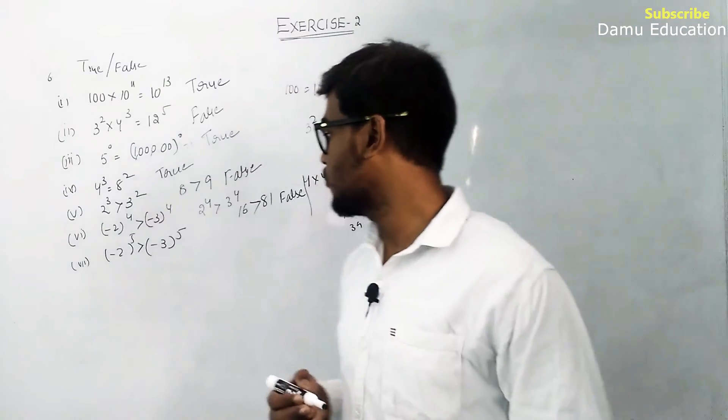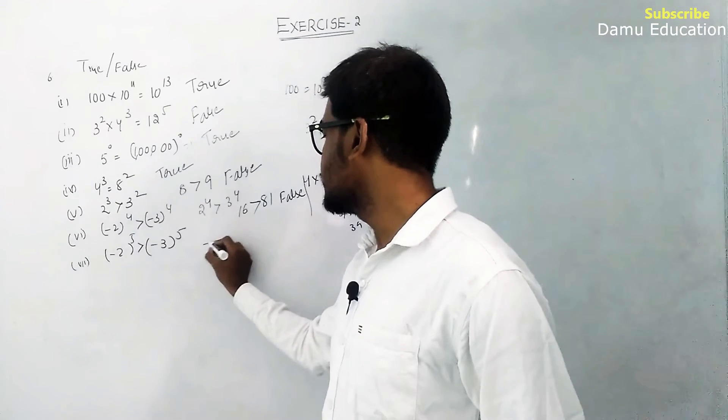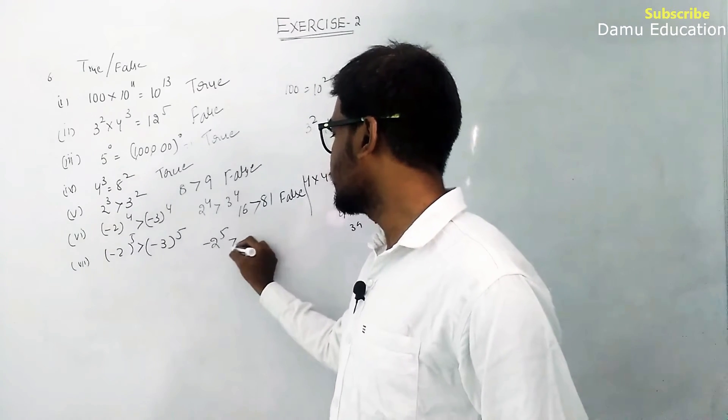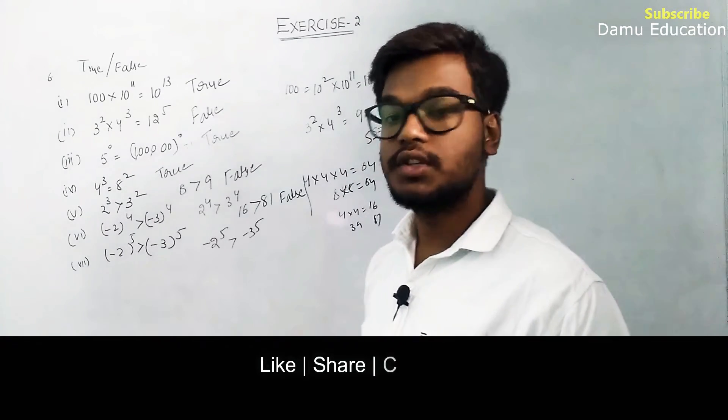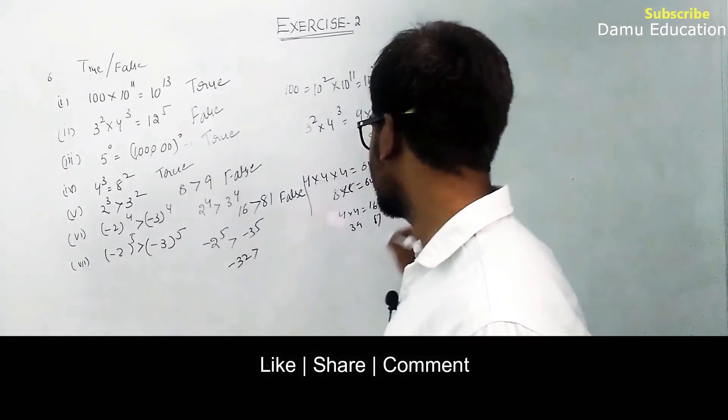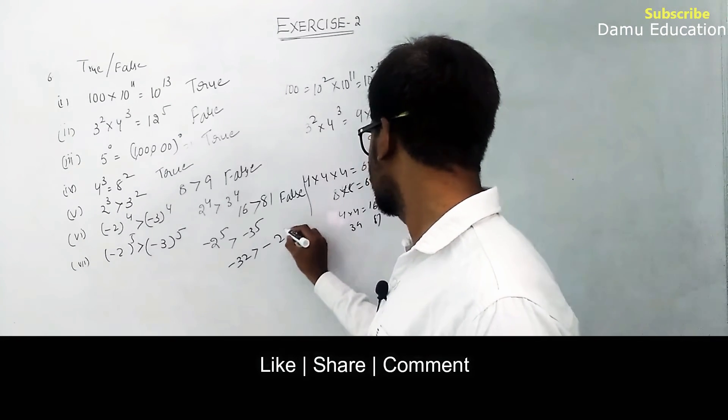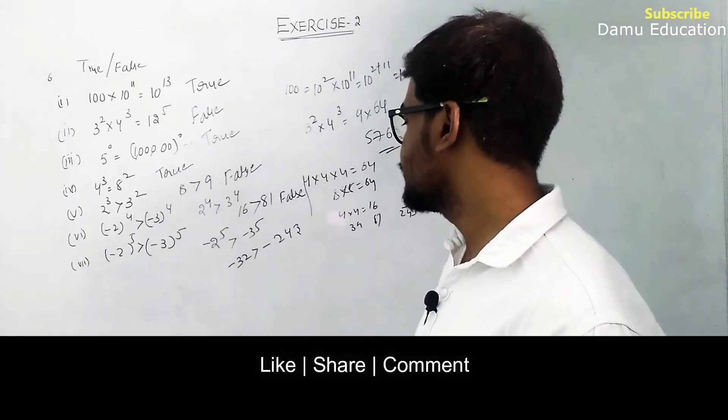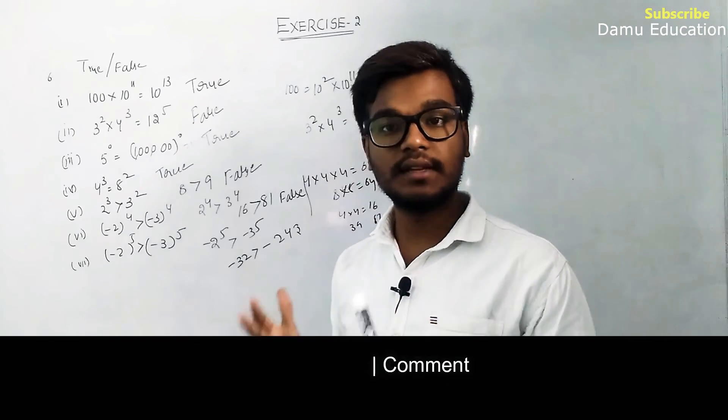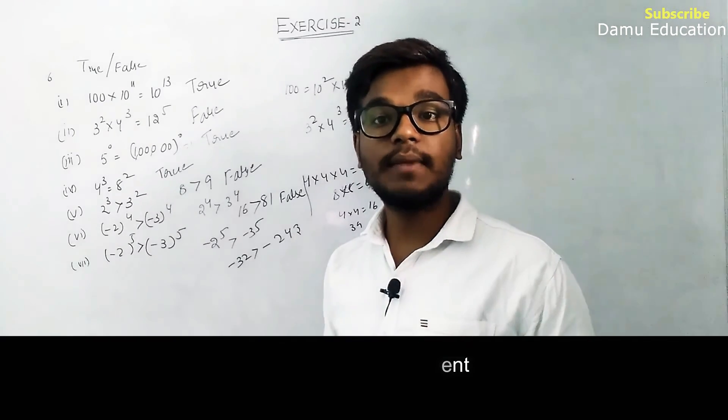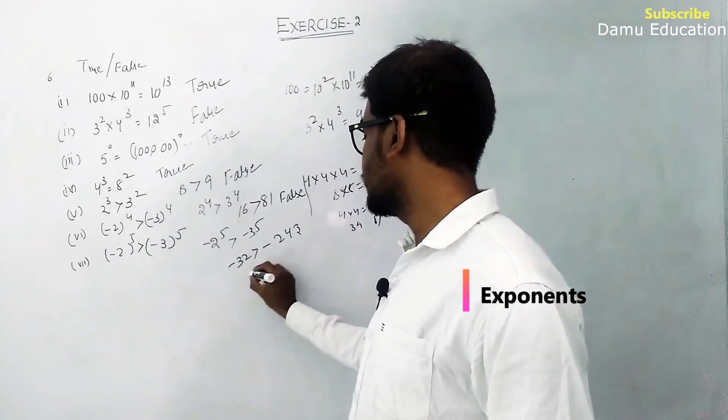Next: (-2)⁵ > (-3)⁵. (-2)⁵ = -32 and (-3)⁵ = -243. -32 is greater than -243 because when comparing negative numbers, the less negative number is greater. So this one is true.